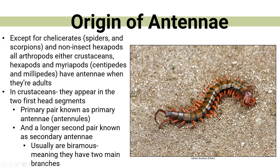So how did these antennae come to be, and why do insects really need them? Except for spiders, scorpions, and non-insect hexapods, basically all arthropods — like crustaceans, centipedes, and millipedes — will have antennae as adults, and sometimes in larval form too. Crustaceans, like crayfish or lobster, have two head segments and two different types of antennae. The first is called the primary antenna, sometimes called antennules. Then they have a second pair, which is a little bit longer, known as the secondary antenna.